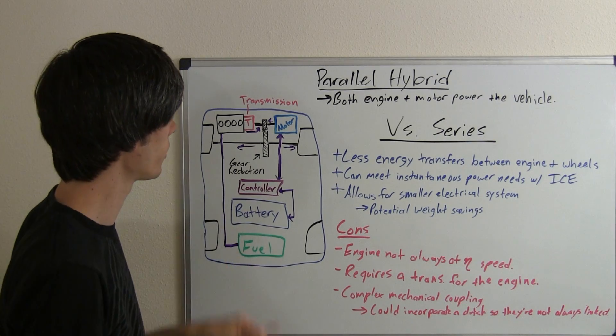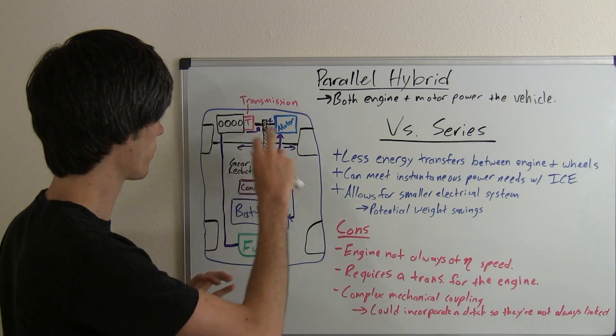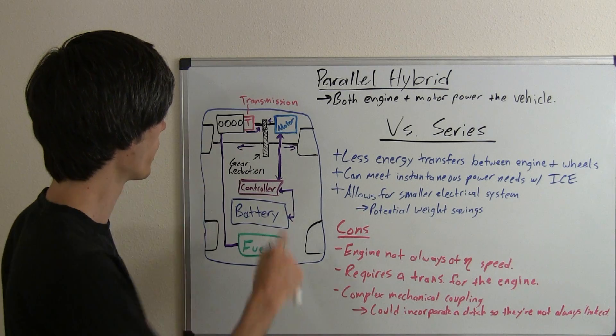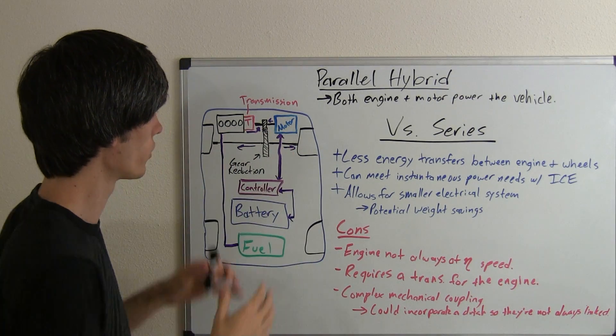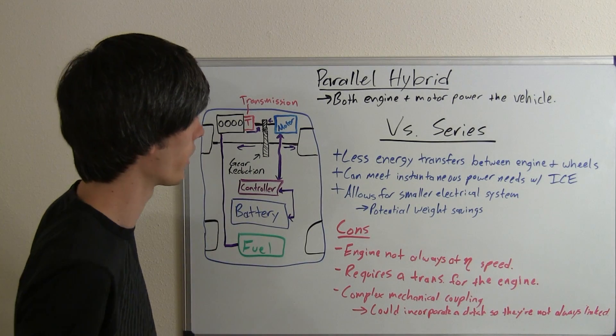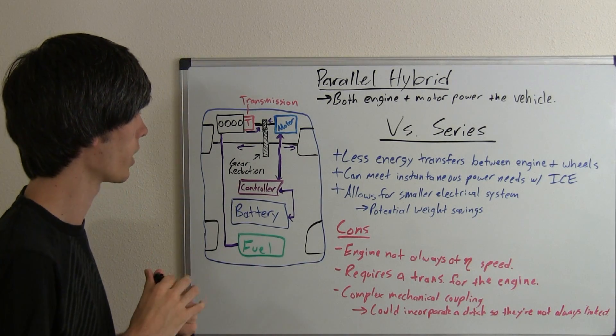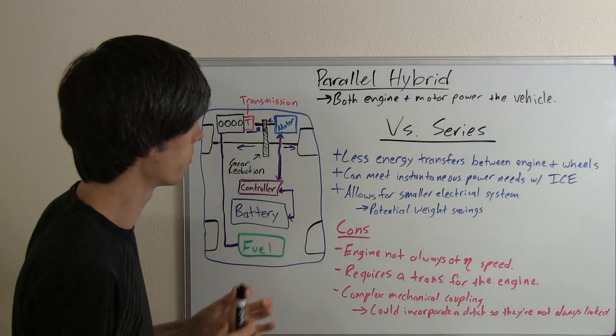Unlike in the series where the engine had to go through this complicated system of transferring the energy, it just goes straight from the engine to the transmission straight to a gear that's driving the wheels. So you don't have any major losses there that you could have in another type of series hybrid.